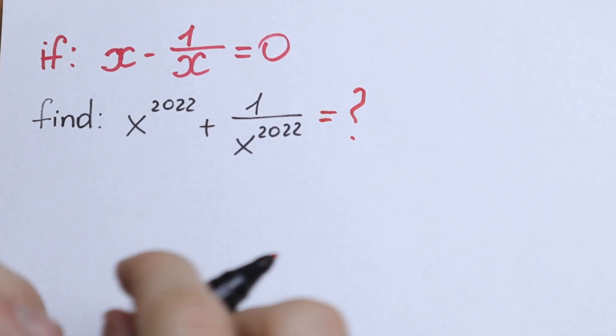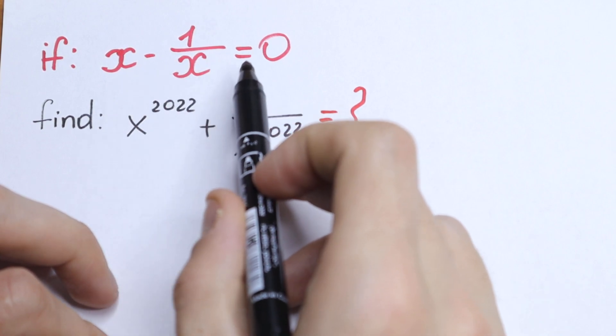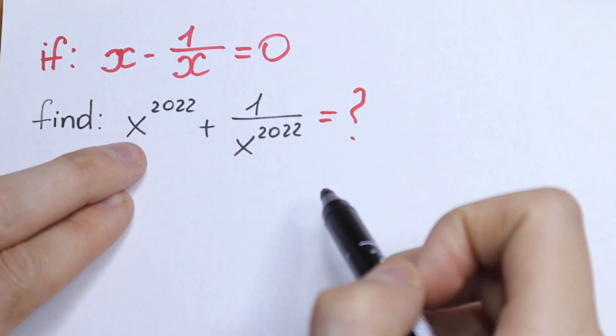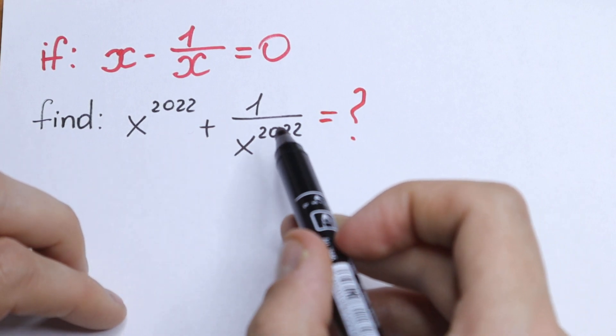Hello everyone, welcome back to MathMove. Today we have an interesting algebra problem. We have that x minus 1 over x equal to 0 and we need to find x to the power 2022 plus 1 over x to the power 2022.